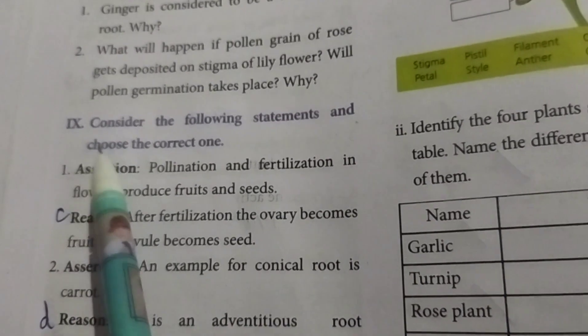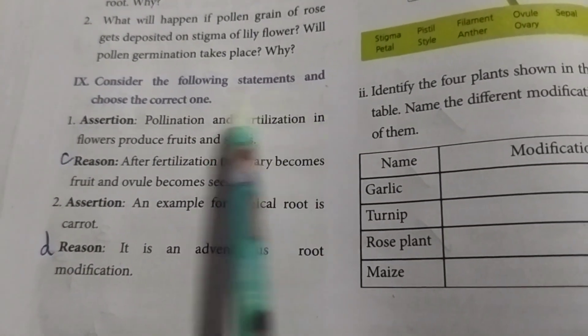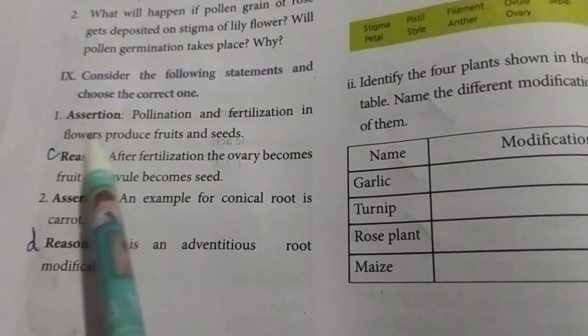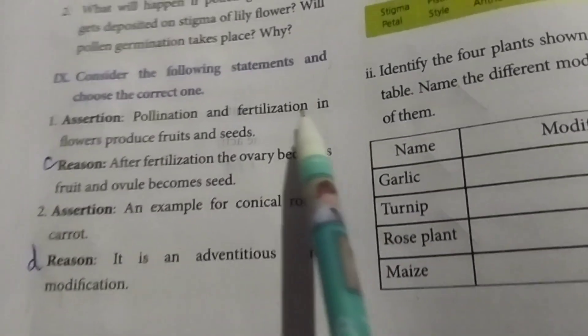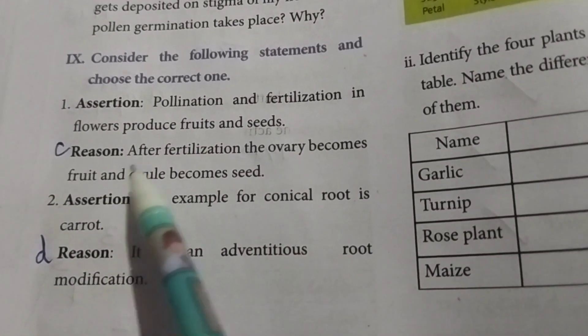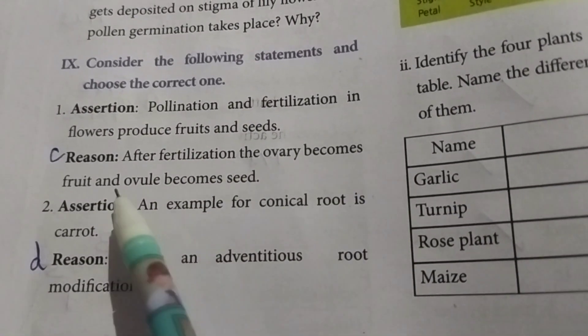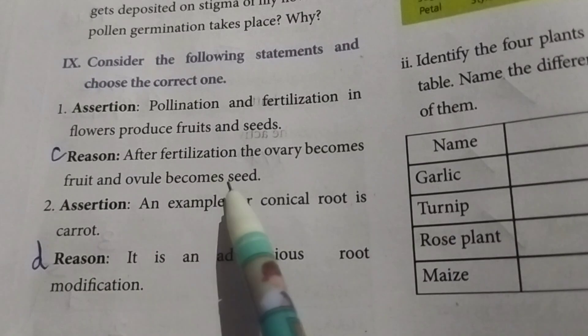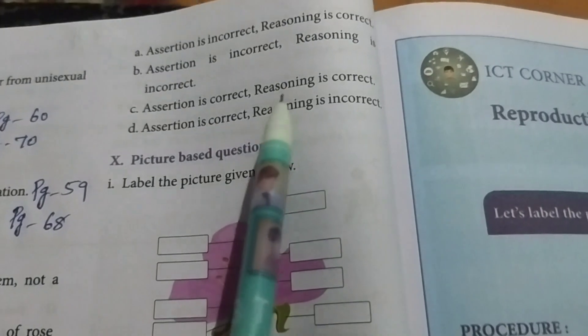Roman numeral IX: Consider the following statements and choose the correct one. First one — Assertion: Pollination and fertilization in a flower produce fruits and seeds. Reason: After fertilization, the ovary becomes fruit and the ovule becomes seed. Answer: Option C — Assertion is correct, Reason is correct.